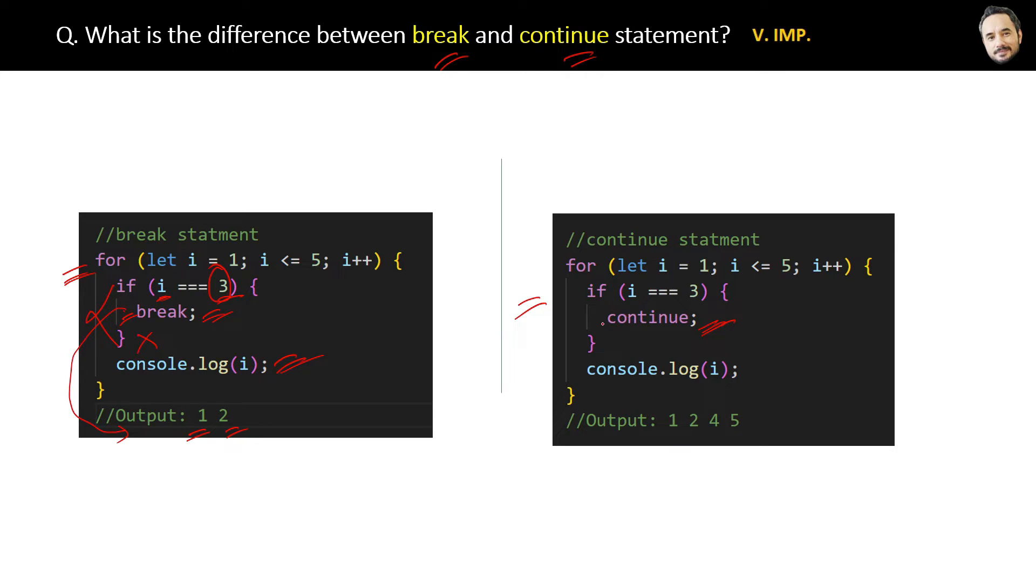Here, instead of breaking the loop, the continue statement will just skip the rest of the code and send the control back to the start of the loop again. So here in the output, after 1 and 2, the value 3 will not be logged and skipped, but 4 and 5 will be logged.